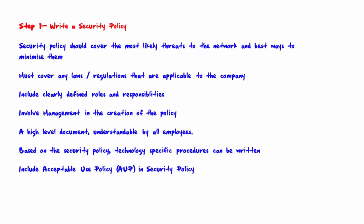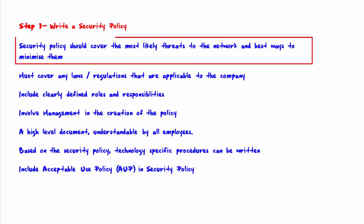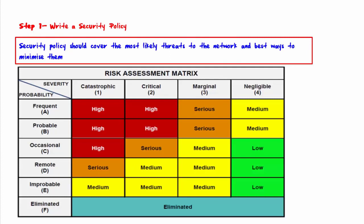Welcome to step one: write a security policy. A security policy should cover the most likely threats to the network and the best ways to minimize them. A risk assessment may be used to determine how likely specific threats are. A risk assessment will often give a dollar amount that it would cost the company should a particular risk be realized, multiplied by the number of times that risk is likely to occur per year. For example, if a risk costs $2,000 each time it occurs and is likely to occur three times per year, the cost is $6,000 on a yearly basis.